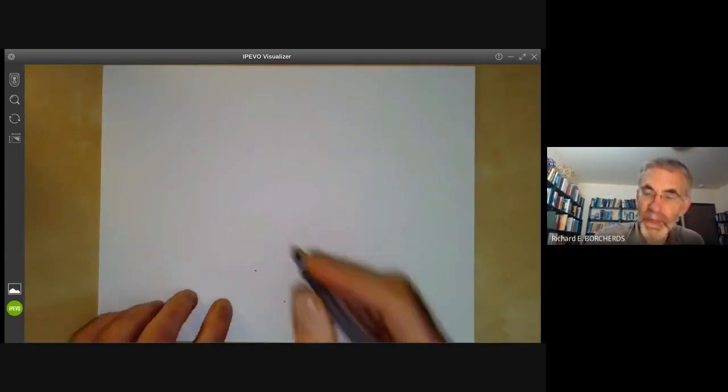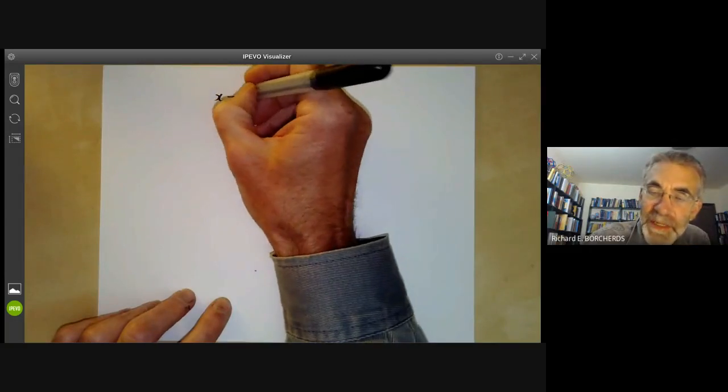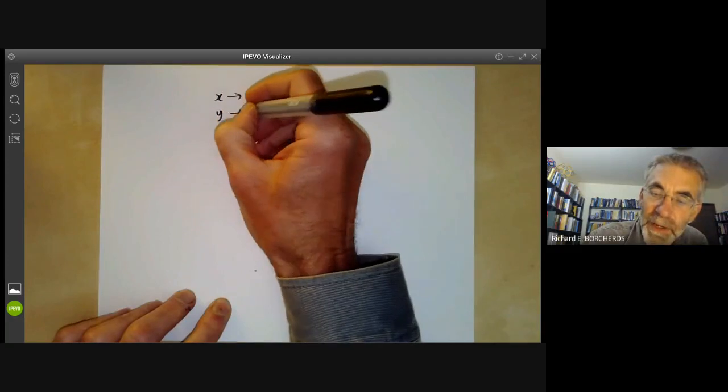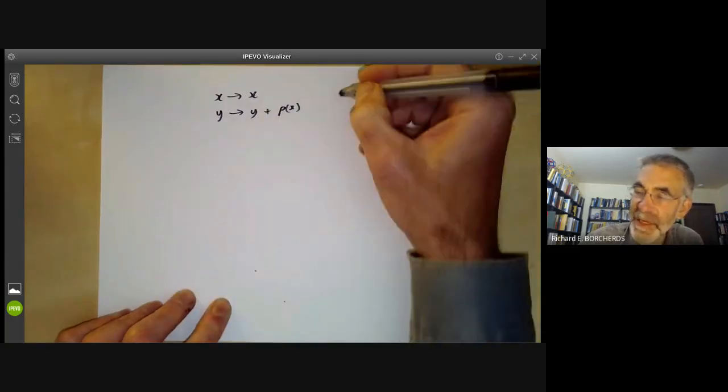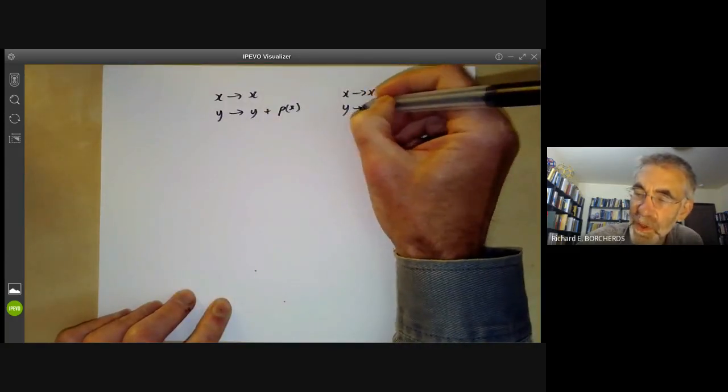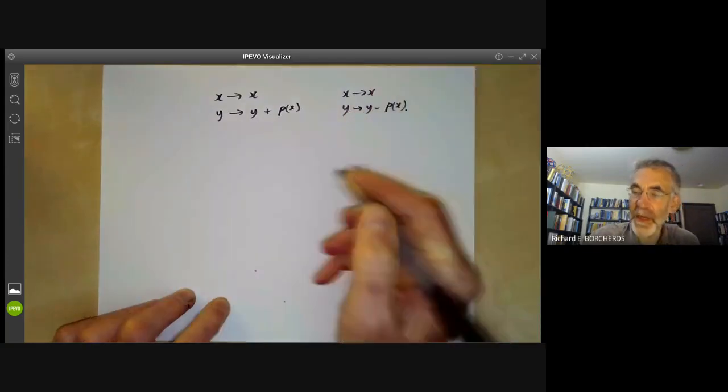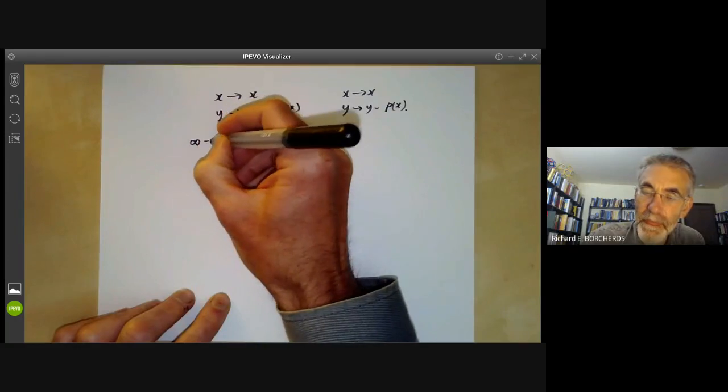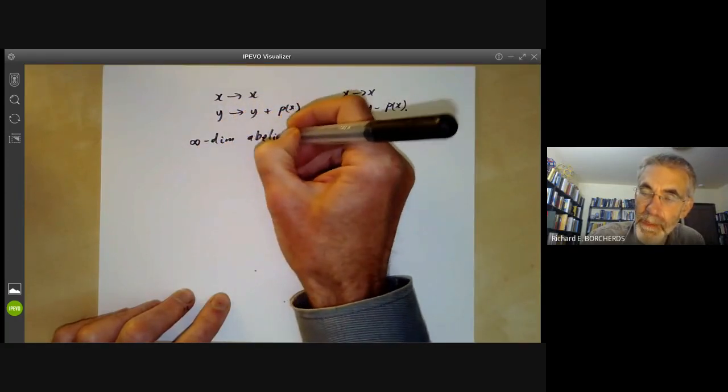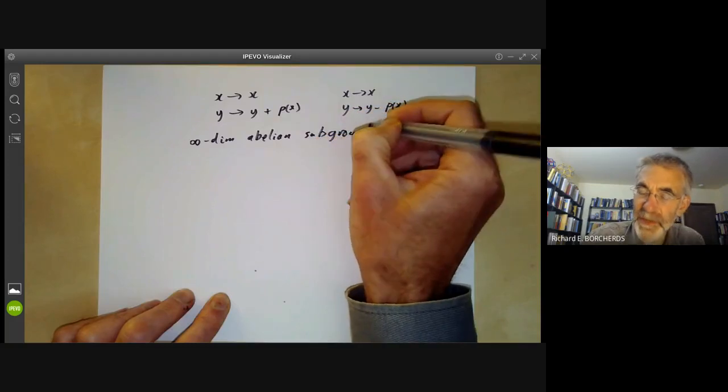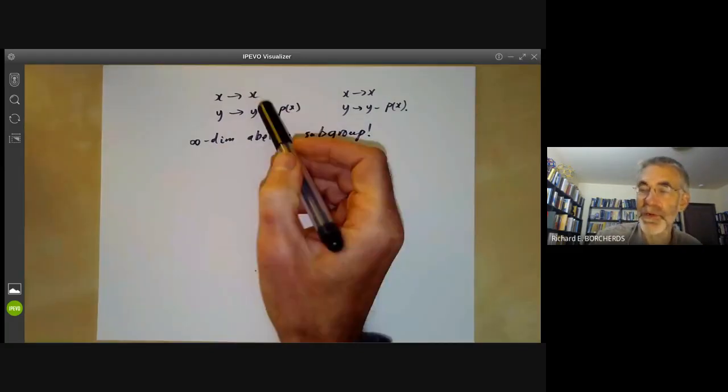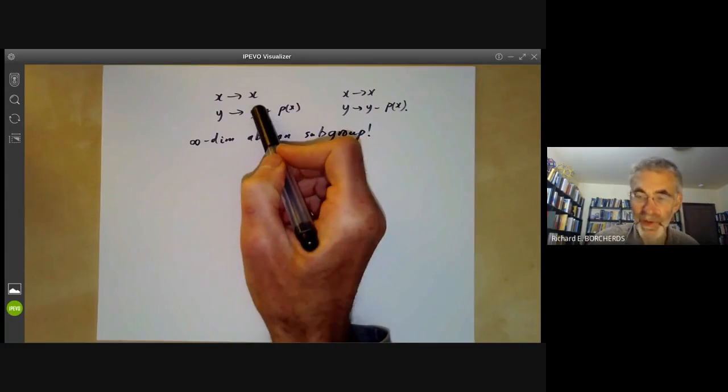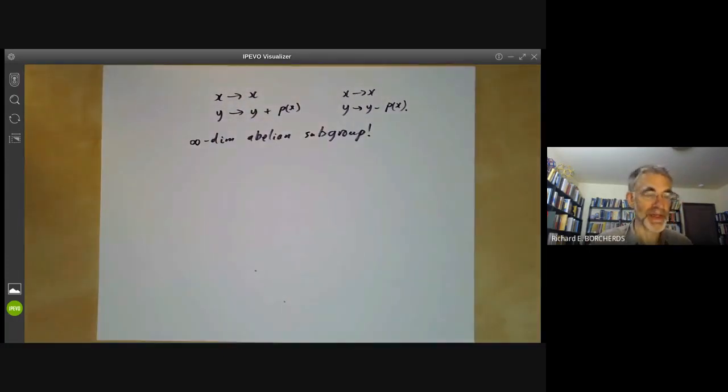What other automorphisms can you get? For example, we can have the following automorphism: we map x to x, and we map y to y plus any polynomial in x. This obviously has an inverse where we map x to x and y to y minus this polynomial in x. So we have an infinite dimensional abelian subgroup. It's a very large infinite dimensional group of automorphisms. You can do lots of other things - instead of fixing x, we can fix y or some other linear polynomial, and then we could start composing these. So the automorphism group is getting pretty hairy.